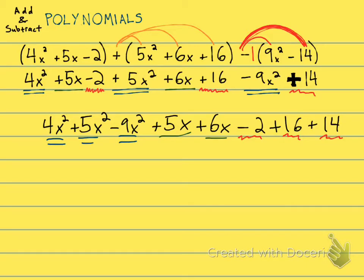So let's look at our x². That's 4x² plus 5x². That's 9x² minus 9x² is going to be 0x². So these three really cancel out. Then I have my x's. I have 5x plus 6x. That's 11x.